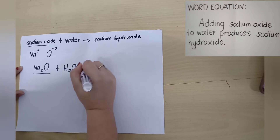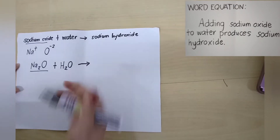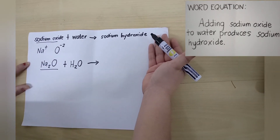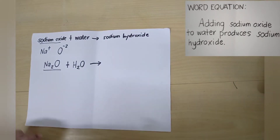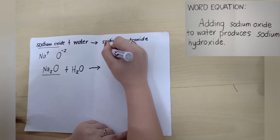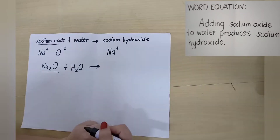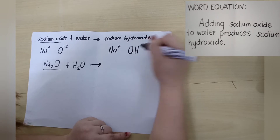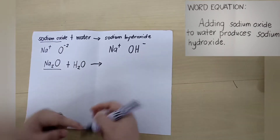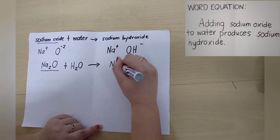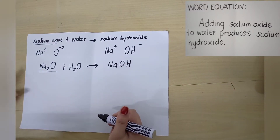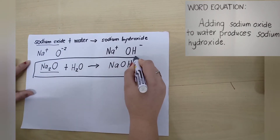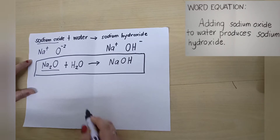We have the arrow which means 'reduces' or yields, and then we have the product which is sodium hydroxide. The symbol for sodium is Na with the charge of positive 1. Hydroxide is a polyatomic ion — we have OH with a charge of negative 1. After crisscrossing, we will have the chemical formula for sodium hydroxide as NaOH. Therefore, we have the chemical equation as Na2O plus H2O yields or produces NaOH.